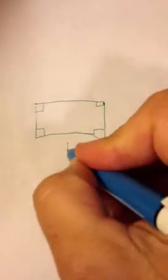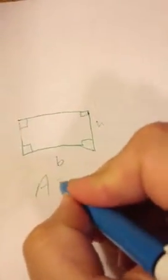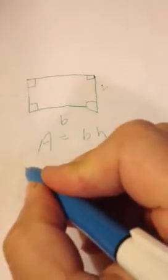And so for anything with four right angles, we know that if we've got a base here and we have a height here, that the area is equal to base times height.